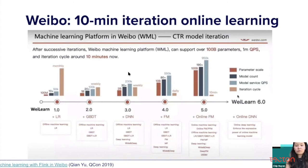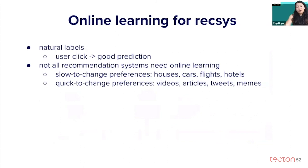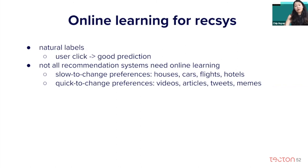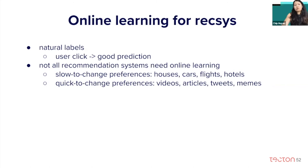There are different use cases for online learning, and the most prominent use case right now is recommendation systems. Recommendation system problems have natural labels — if you give users recommendations, you can observe how users react to get a label. If a user clicks on a recommendation, you know it's a good prediction; if they don't, it's probably not a good recommendation. Not all recommendation systems need online learning — many systems have slowly changing preferences, like users' preferences for houses, cars, flights, or hotels. But users' preferences for online content such as videos, articles, tweets, and memes can change very quickly from second to second. For systems with quickly changing preferences, online learning is very important.